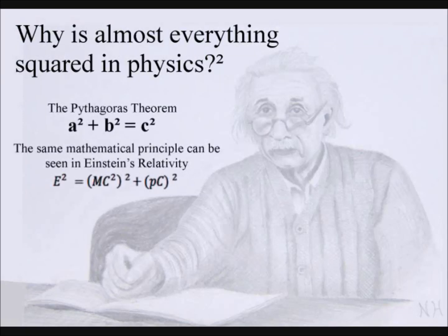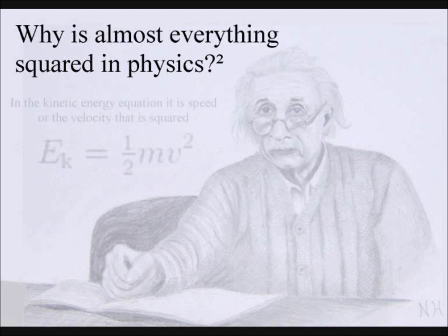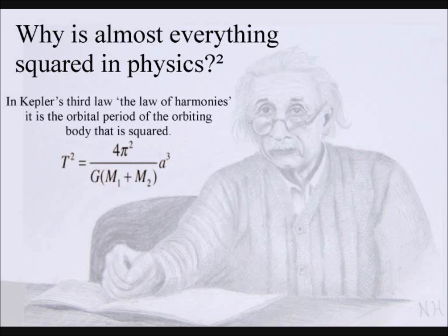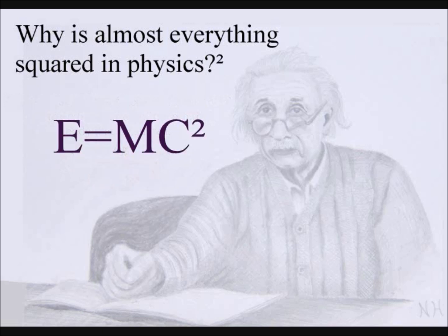Could the reason why so many equations in physics are squared represent aspects of a single truth based on just one geometrical process? The most famous of these equations is Einstein's E=mc², energy equals mass times the speed of light squared, and this is typical of physics equations that are squared.